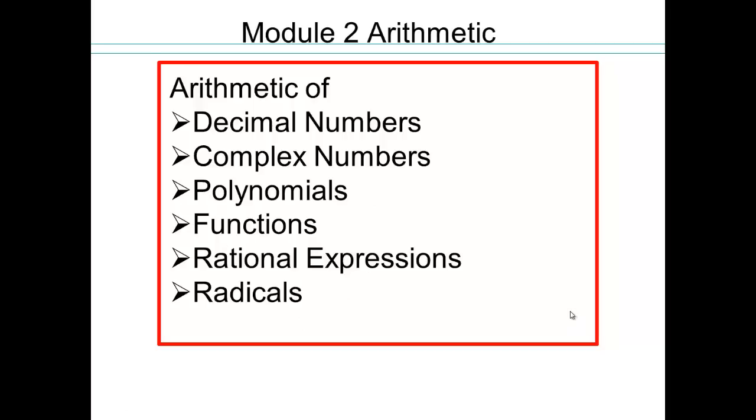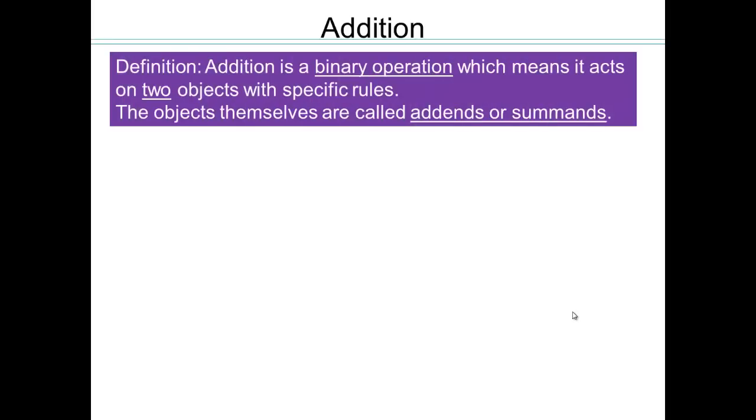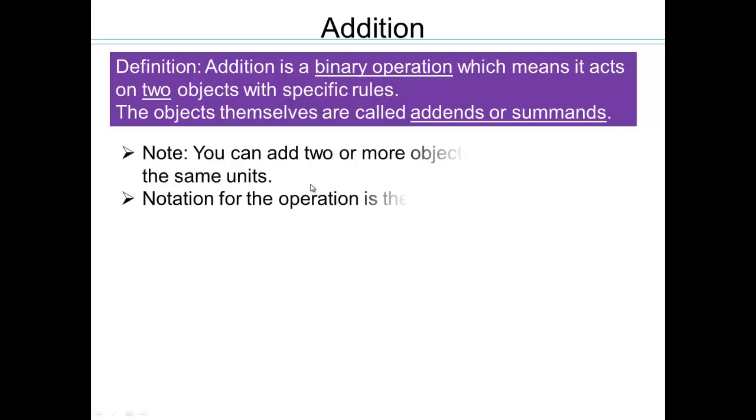There's a total of four arithmetic operations: addition, subtraction, multiplication, and division. We're going to focus our attention right now on addition. Addition is a binary operation, which means it acts on two objects with specific rules. The word binary refers to two. The objects themselves are called the addends or summands.